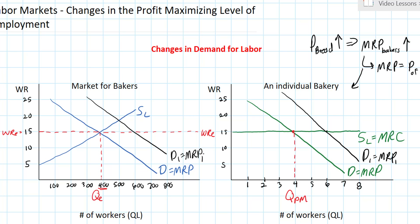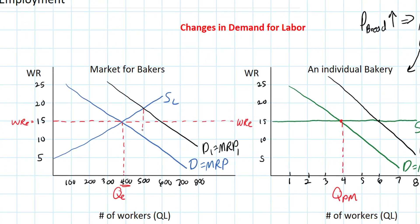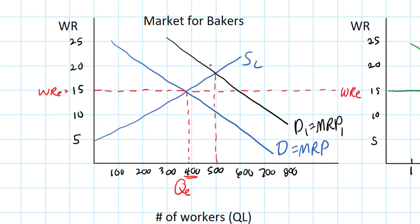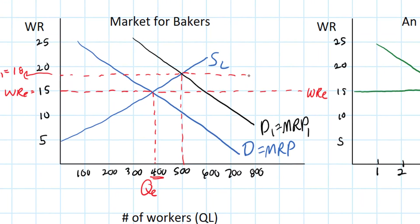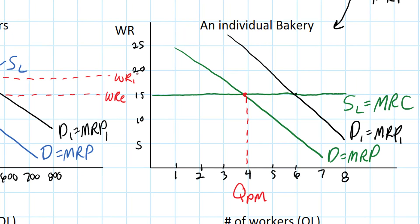So how does this affect the equilibrium wage rate? Since the price of bread rose and each bakery wished to hire more workers because of the increased marginal revenue product of labor, we're going to see a situation in which the equilibrium wage rate is driven up. Labor becomes scarcer, bakeries need more workers, and they're willing to pay a higher wage rate to get those workers. So the equilibrium wage rate increases to around $18. And since each individual firm is a wage taker, each firm sees the wage rate it has to pay rise as well, increasing the marginal resource cost.